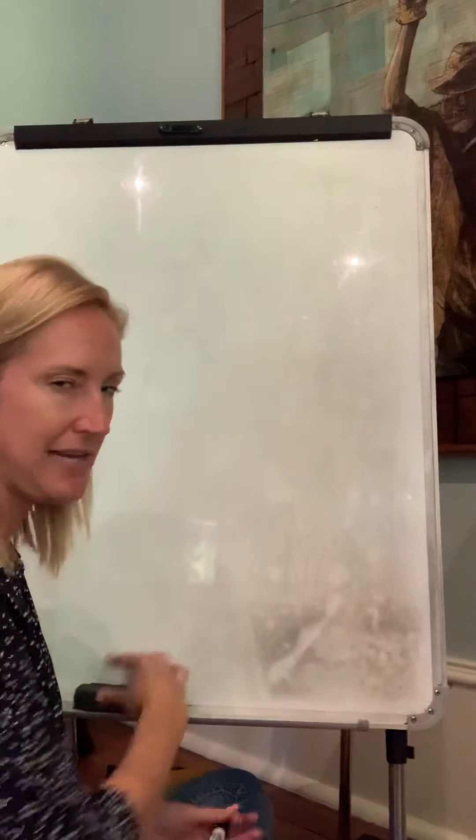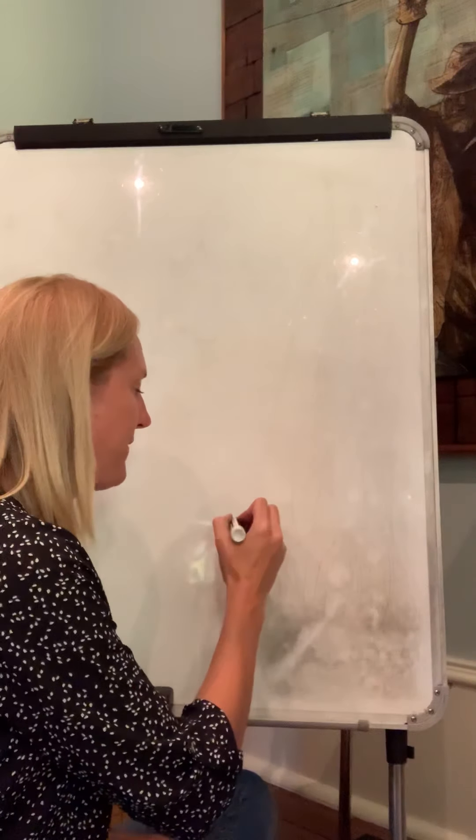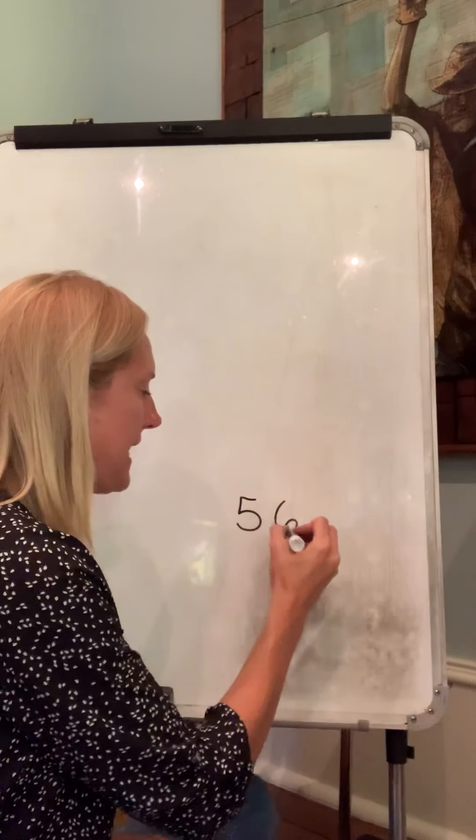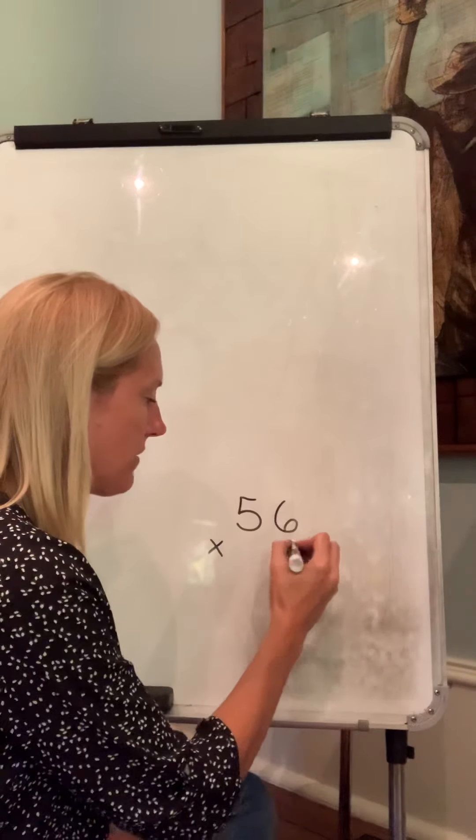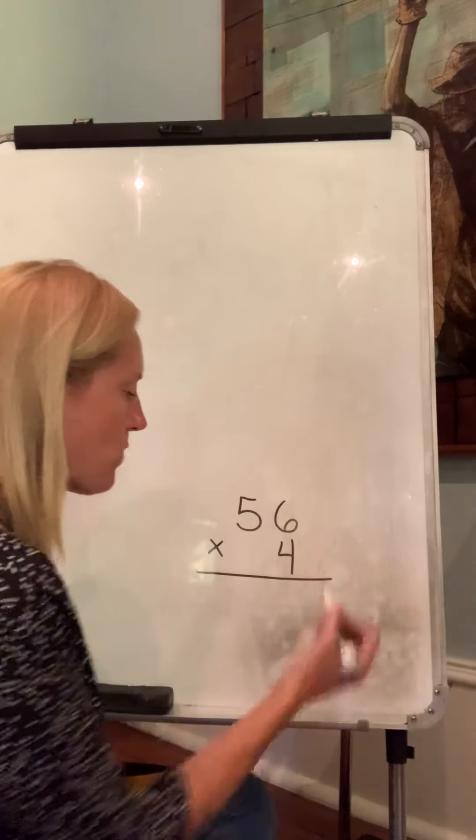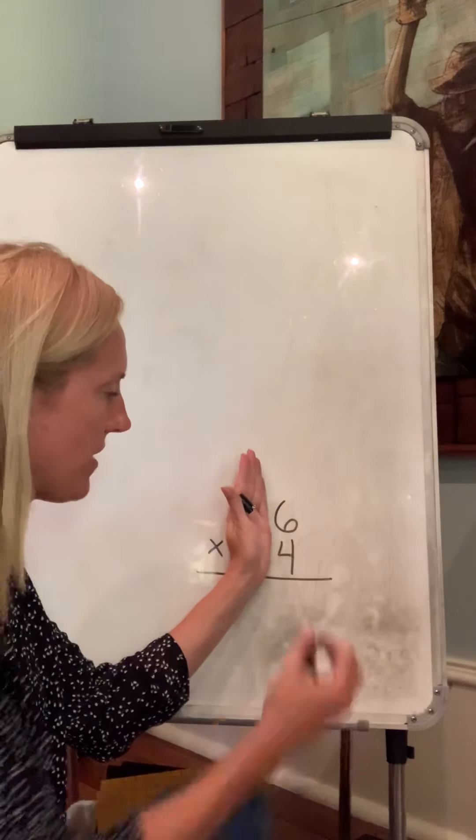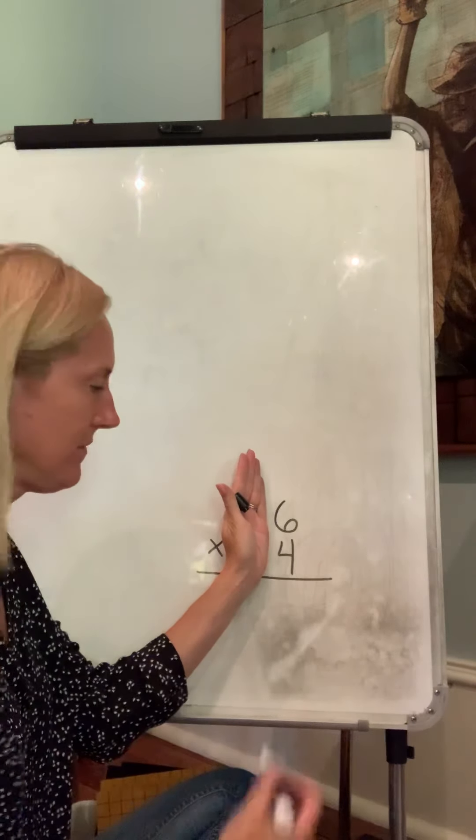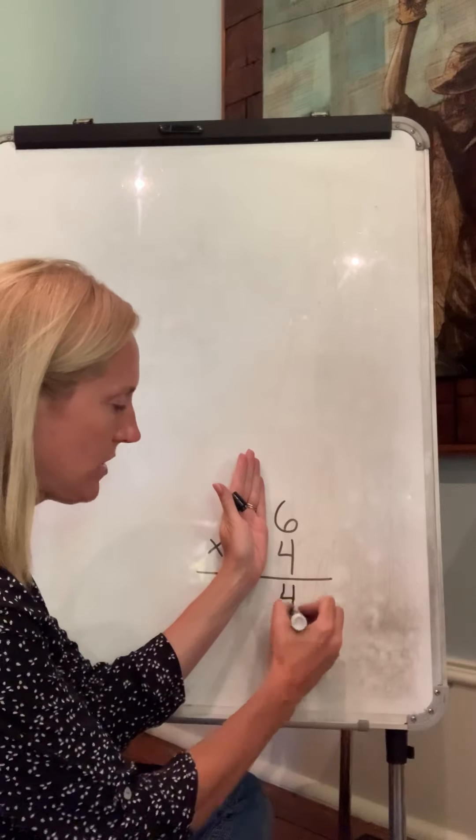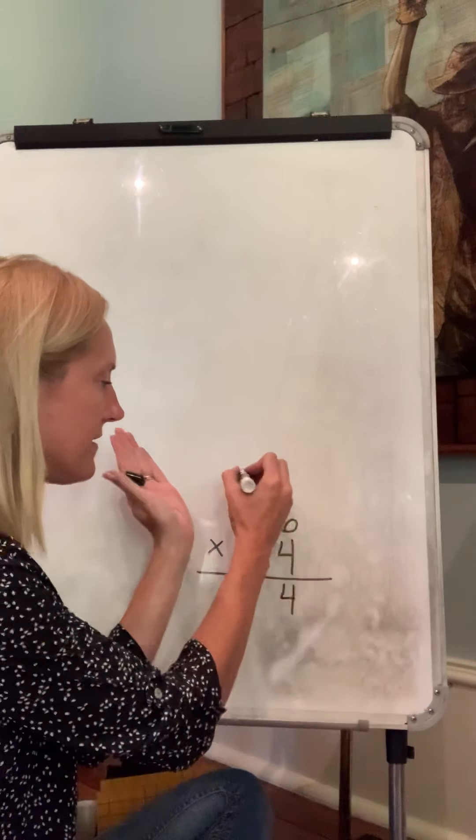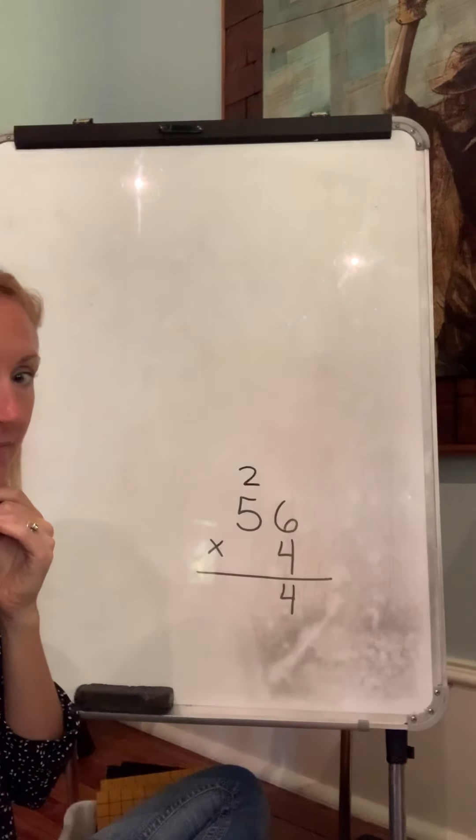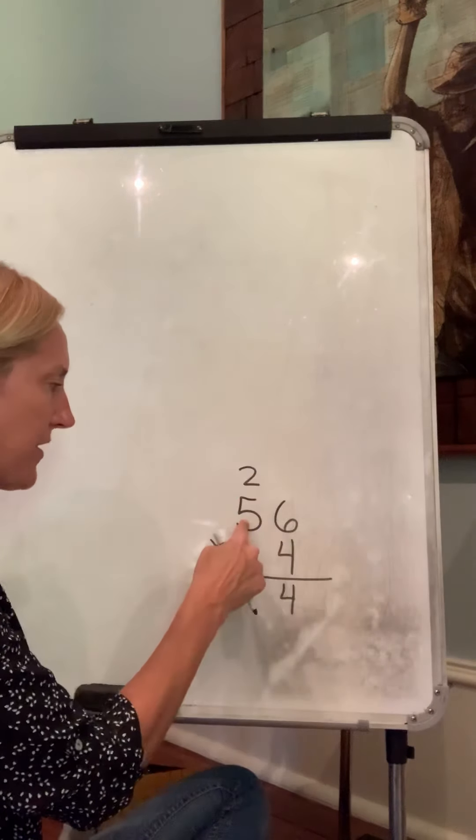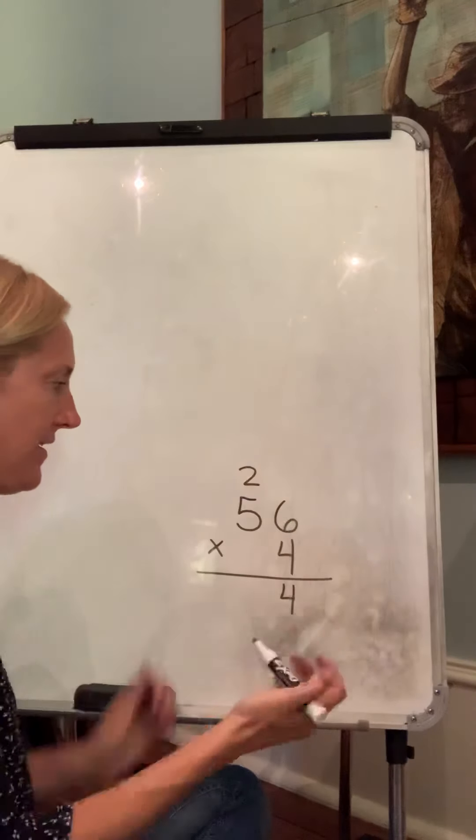Let's do another one together for practice. What if I have fifty-six times four? Start over here: six times four is twenty-four, but I can't put twenty-four down here. I can put the four, then the two tens need to go up here. It's like twenty-four, but the twenty needs to go with the fifty - the tens go together. So we did six times four.